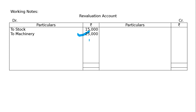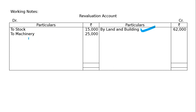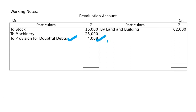Third, land and building is to be appreciated by 62,500. So 62,500 will appear on the credit side — land and building is credited to Revaluation account. Fourth, provision for doubtful debts is to be made at 5% on sundry debtors. Sundry debtors are 80,000; 5% of that is 4,000. Provision for doubtful debt is an increase in liability, so it is debited to Revaluation account.